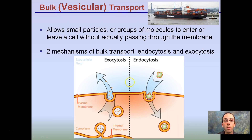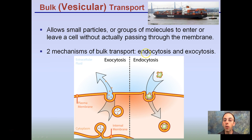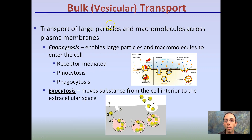Some of this might sound familiar. Bulk transport involves these vesicles, which allow small particles or groups of molecules to enter or leave the cell without actually passing through the membrane. Two mechanisms of bulk transport are endocytosis and exocytosis. Endo means taking something in, while exocytosis means something is leaving or exiting the cell. Bulk transport is used to transport large particles and macromolecules across the plasma membrane.